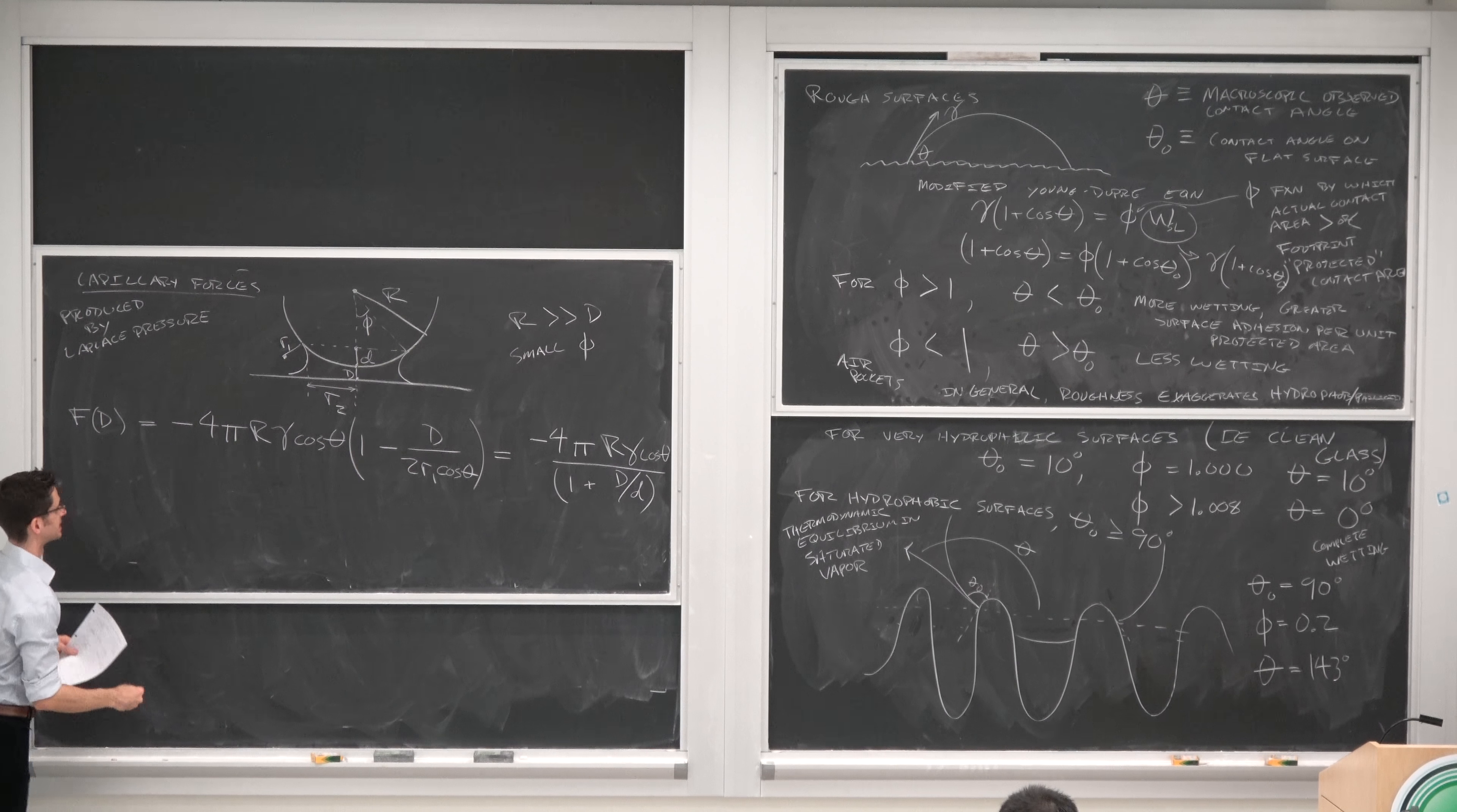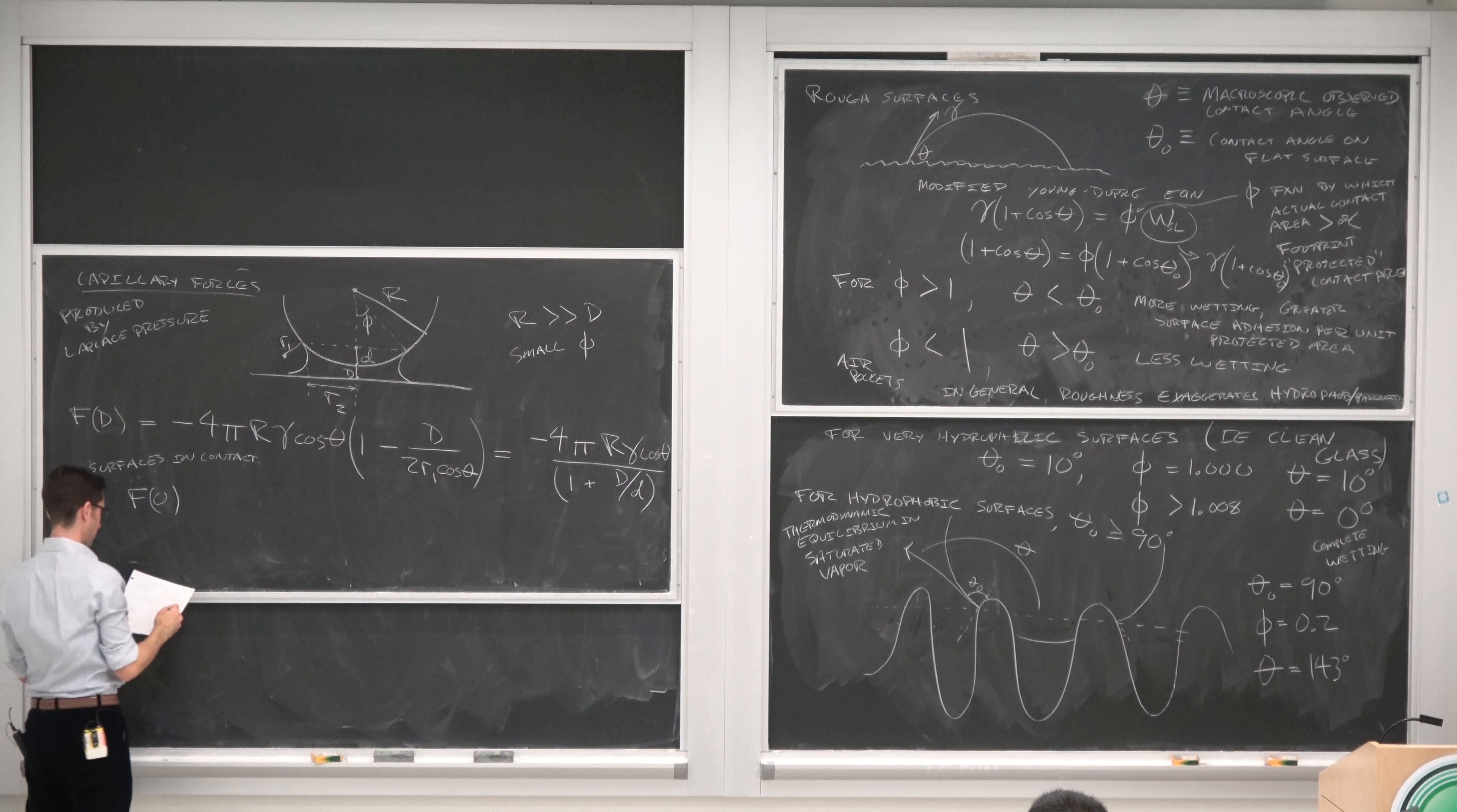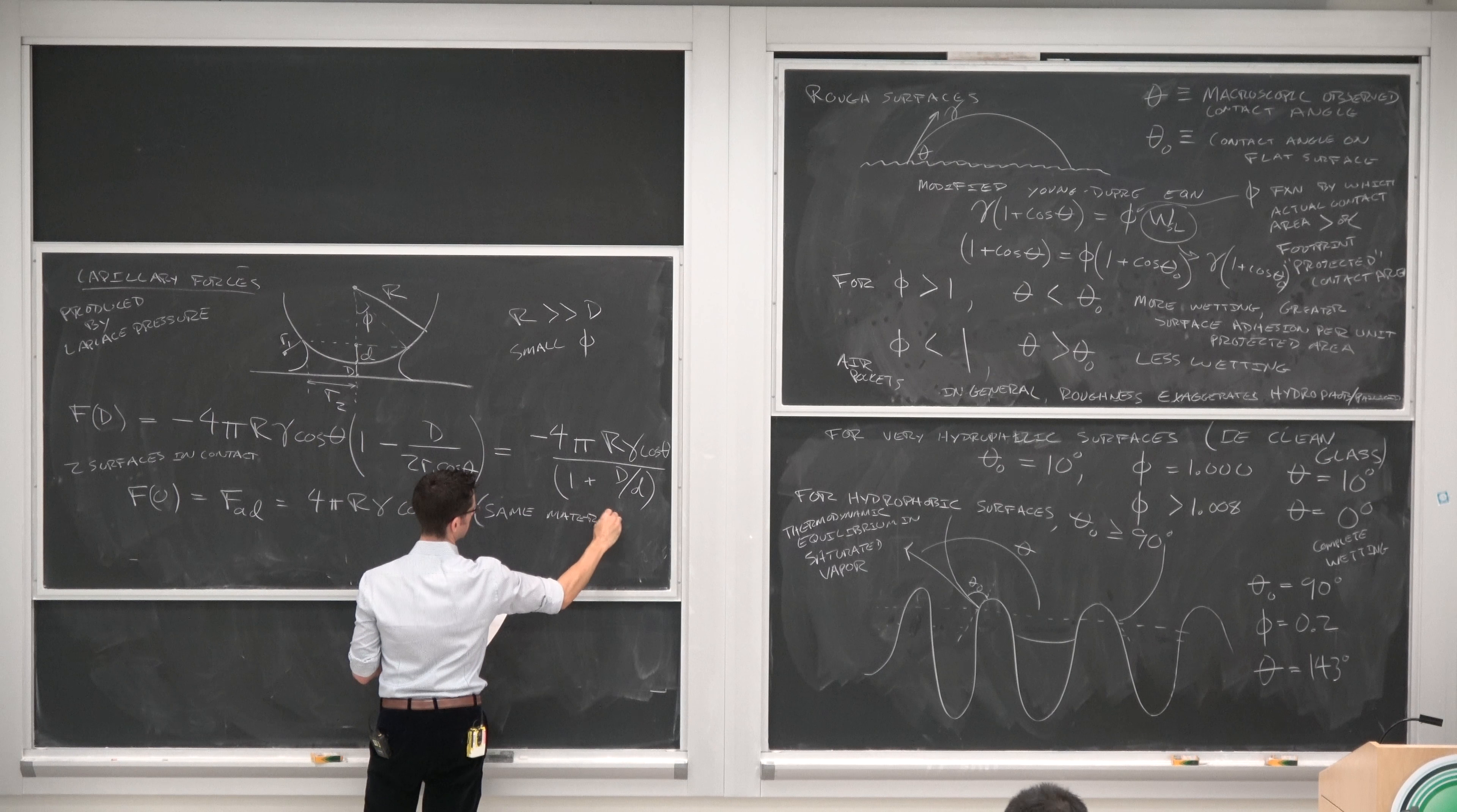How about two surfaces in contact? Two surfaces in contact is a much more useful relation for our purposes. So F at D equals 0 equals the force of adhesion due to capillary forces, so no van der Waals component here. And this is equal to 4 pi R gamma cosine theta for the same materials.